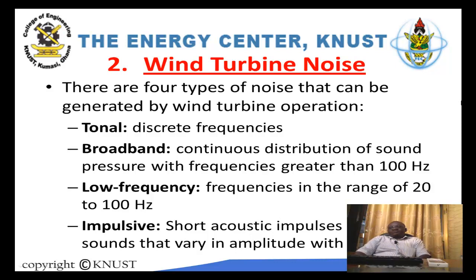Now we move on to wind turbine noise. As already explained in detail in the material, wind turbines actually produce noise, especially when working or moving at high speeds. The noise has been categorized into four types. You have tonal noise, where the noise is made of discrete frequencies. You have broadband noise, where you have a continuous distribution of sound pressure within or greater than a certain frequency range, which is about 100 hertz. Then there is low-frequency noise — sound within a certain range of about 20 to 100 hertz. And then there is impulsive sound, involving acoustic impulses that vary in amplitude with time. All these categories of wind turbine noise have been explained in detail in the material in very clear simple language.